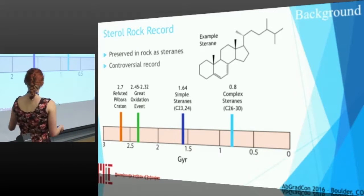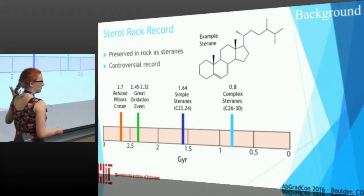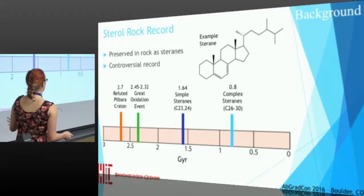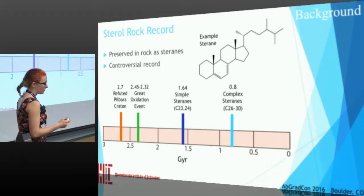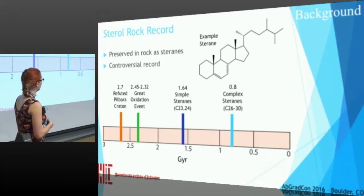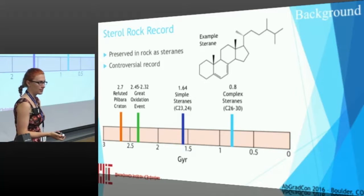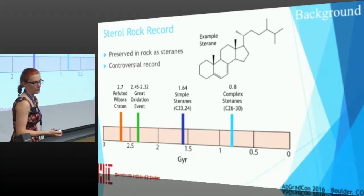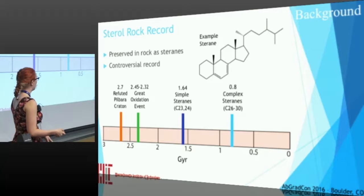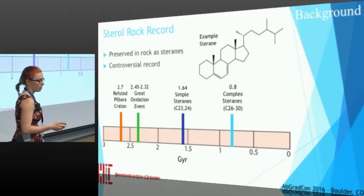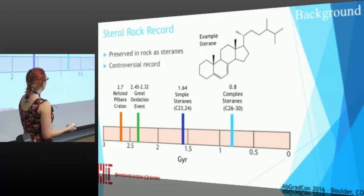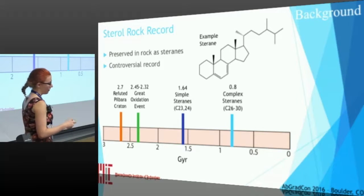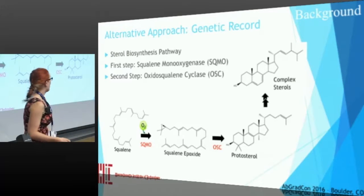However, that was recently refuted — those rocks don't actually have steranes preserved in them. The next closest ones we're sure of in the rock record are at 1.6 billion years ago for simple 23 to 24 carbon sterols, and 800 million years ago for complex steranes with 26 to 30 carbons, which are generally the ones all modern eukaryotes create. So there's some debate as to when this pathway evolved, and looking at the rock record isn't currently helping.